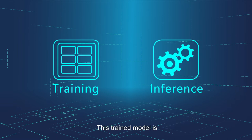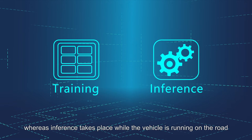Training refers to the process of creating a machine learning model. This trained model is then used to make a prediction during the inference process. Generally, training is an offline process, whereas inference takes place while the vehicle is running on the road.